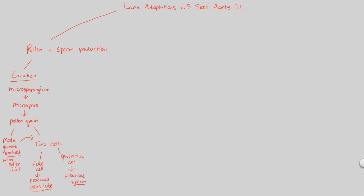The pollen wall is very protective and useful. It contains something called sporopollenin, which is found within the pollen grain wall. Sporopollenin is important because, just as the female gametophyte is protected by the integument, here we have an analogous structure — sporopollenin — that protects the male gametophyte. Protecting these gametophytes is a big commonality among seed plants, essential for allowing the next generation to arise through fertilization.